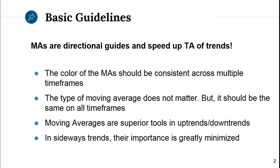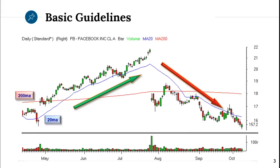Regardless of which type you use, it should be consistent on all time frames. Moving averages are superior tools in uptrends and downtrends. When the stock is uptrending in a stage 2 or downtrending in a stage 4, in sideways trends their importance is greatly minimized.